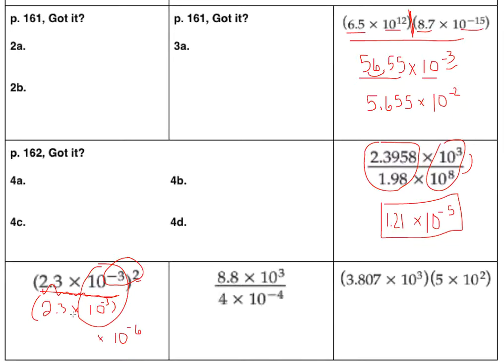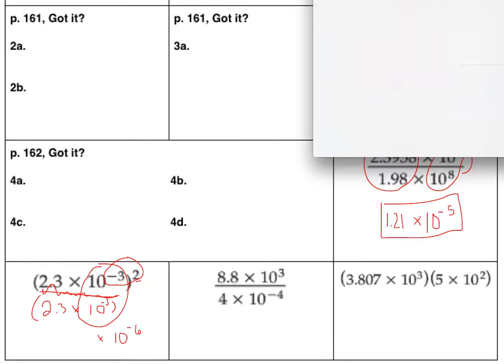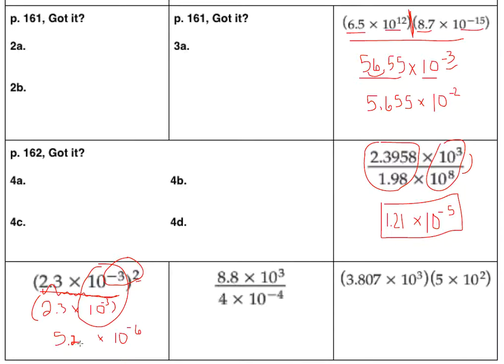And then we're going to take 2.3 times 2.3. So 2.3 times 2.3 is 5.29. And since 5.29 is greater than or equal to 1 and less than 10, our final answer is 5.29 times 10 to the negative 6.